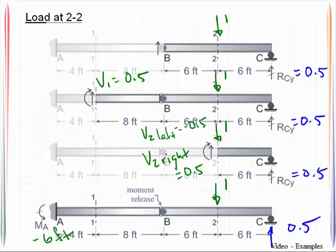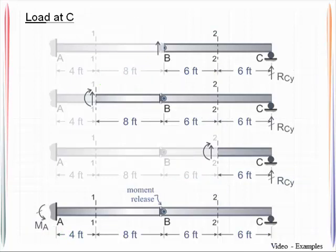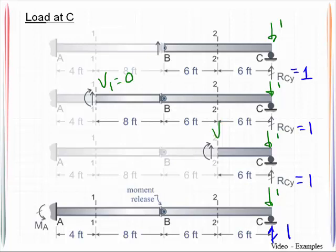Considering our very last location, we will put the unit load at C. Then we will sum moments about point B, find out that RCY is equal to 1. And then stepping through the process, summing forces in the Y, I find out that that's 0. Summing forces in the Y, I find out that that's 0. Summing moments about A, find out that that is 0.